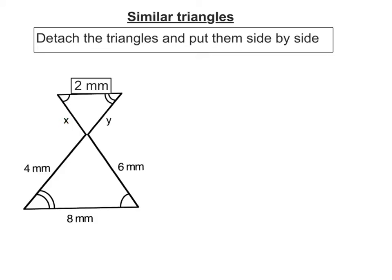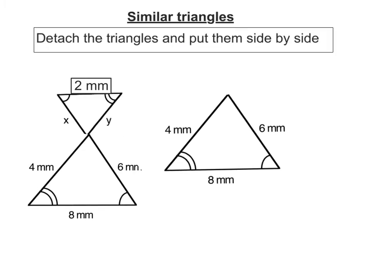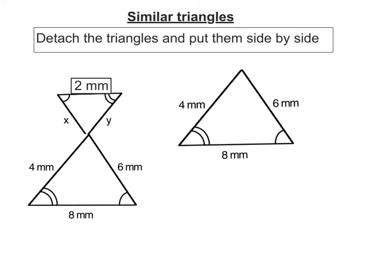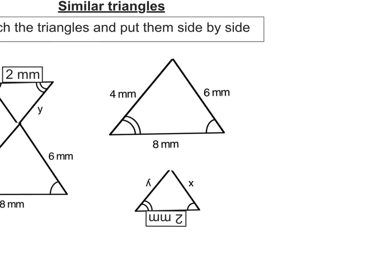First we have to draw the two triangles side by side so we can see what the corresponding sides are. Let's take the first one, there it is, and this one here, and let's spin it around. Now we've got the two triangles side by side with their corresponding sides.